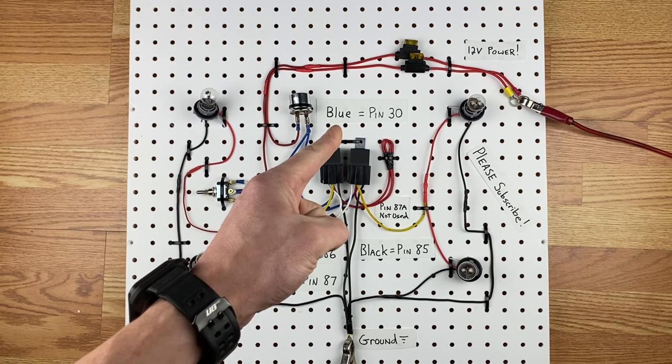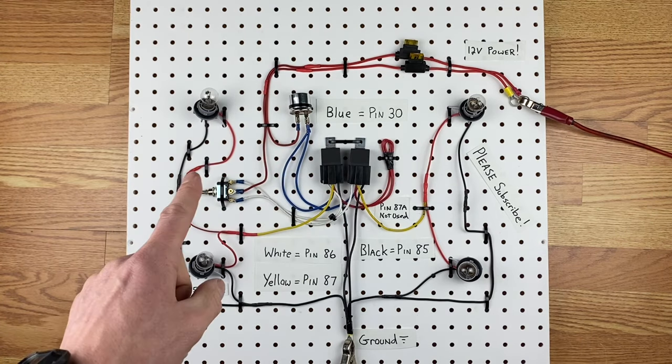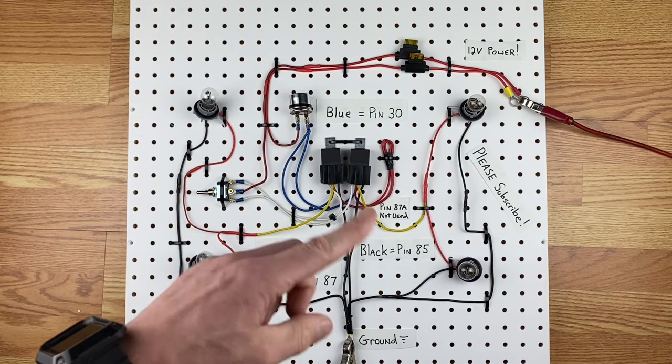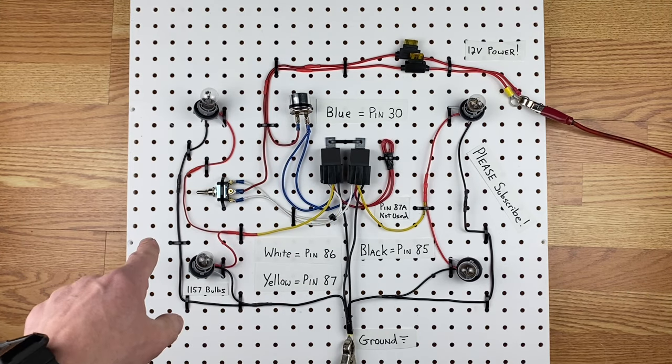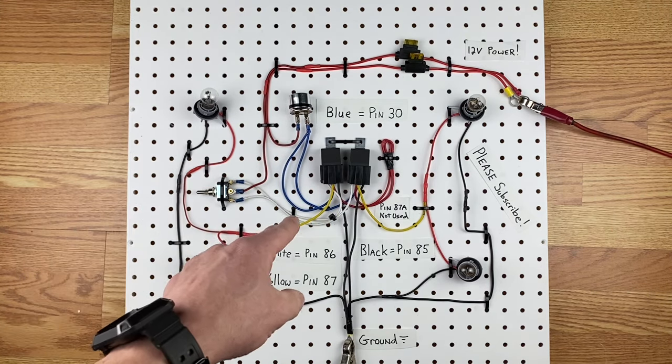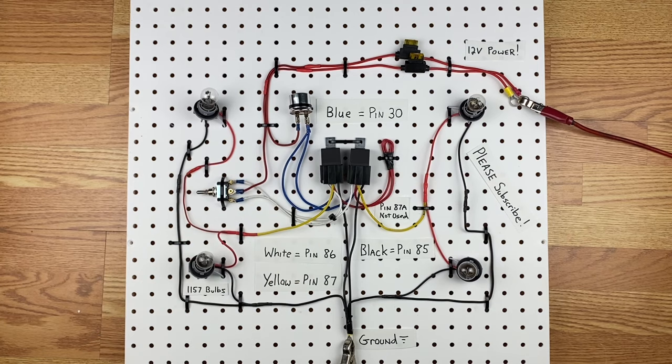Up here you'll notice two fuses. They come in from the battery. One of them actually powers up the light bulbs. The other one just goes to the switch and tells the relays to turn on and off. But we'll get to that in a minute. Now that you know what we're working with, let me show you how to wire it. It's actually easier than it looks, I promise.